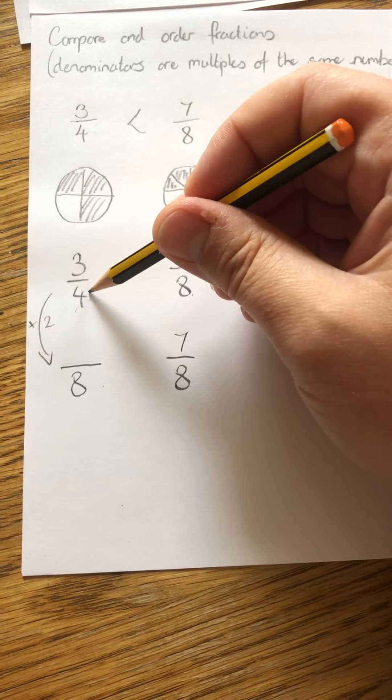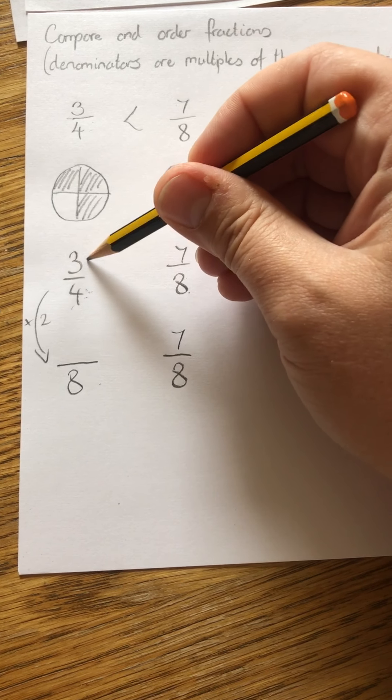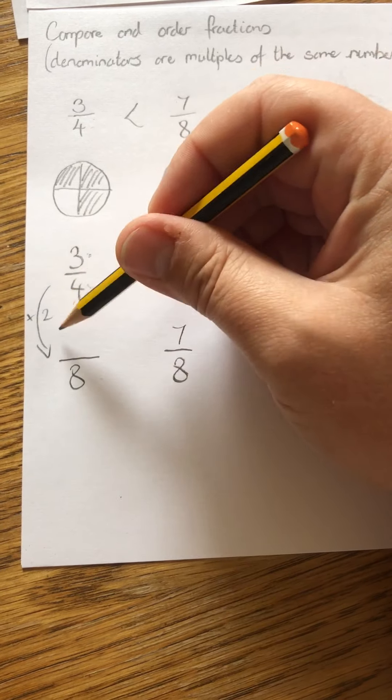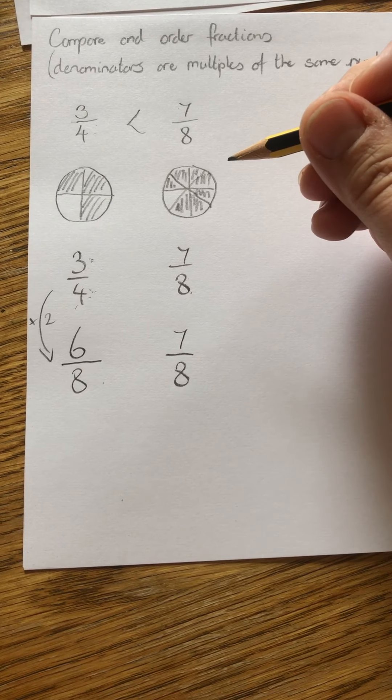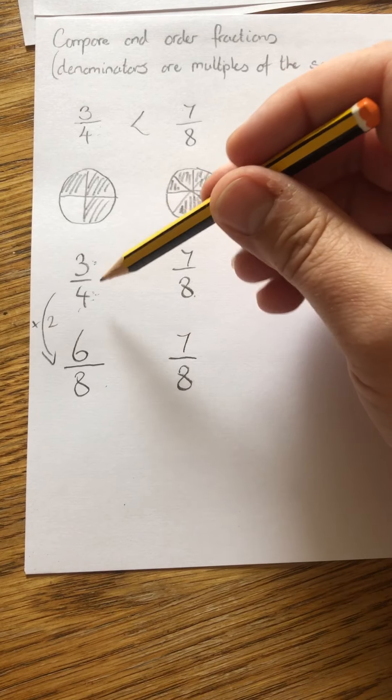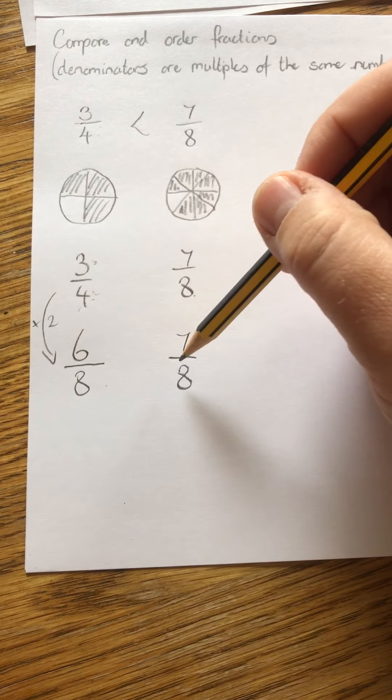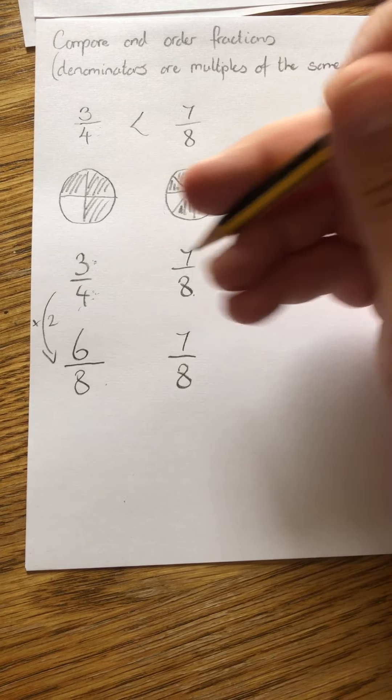And if I'm going to do that to the denominator, I have to do the same to the numerator, the top number in the fraction. So three times two is six. So this time I've changed them so the denominators are the same. And I can see that just as we said before with the picture, seven eighths is bigger than six eighths.